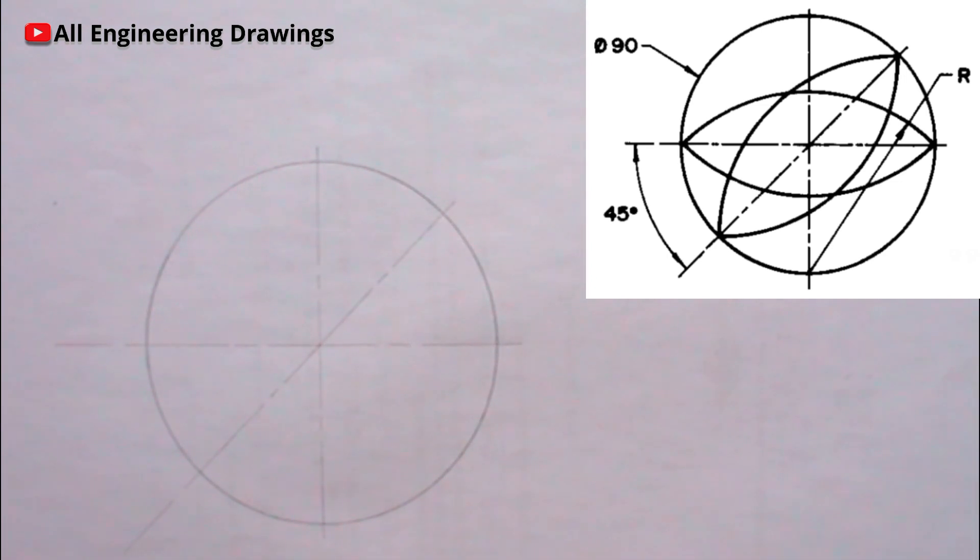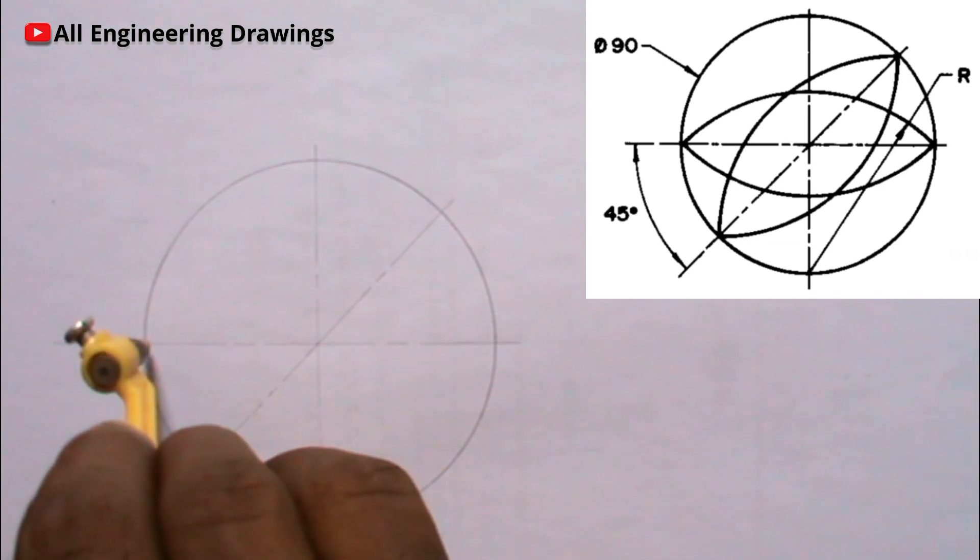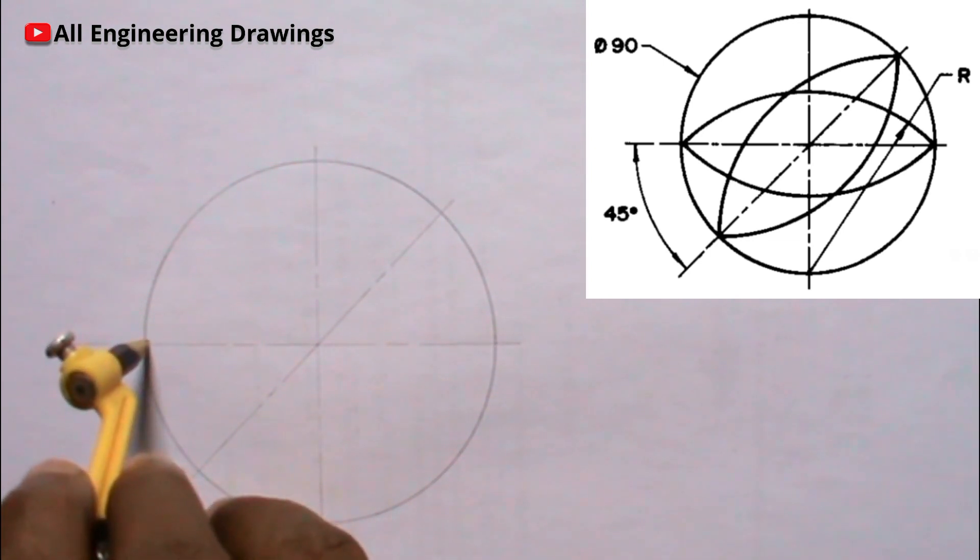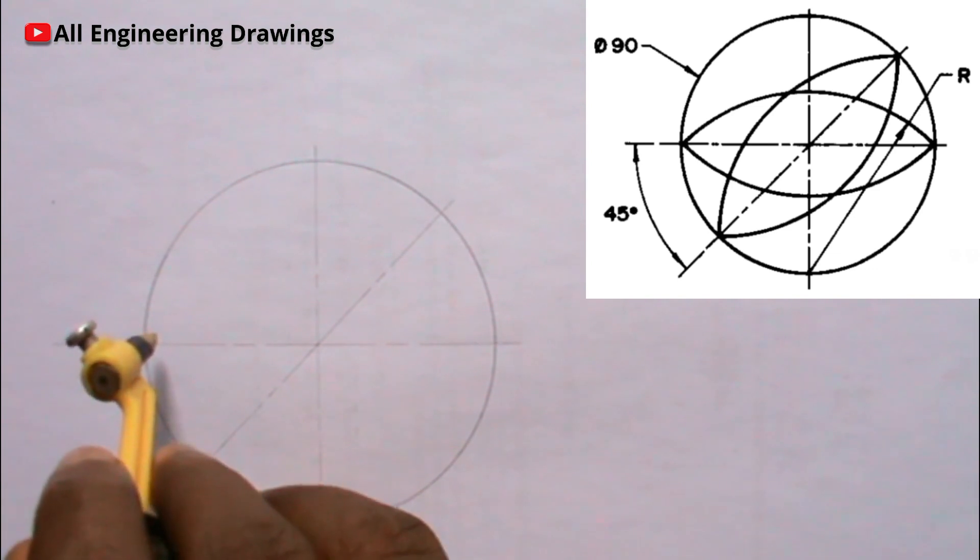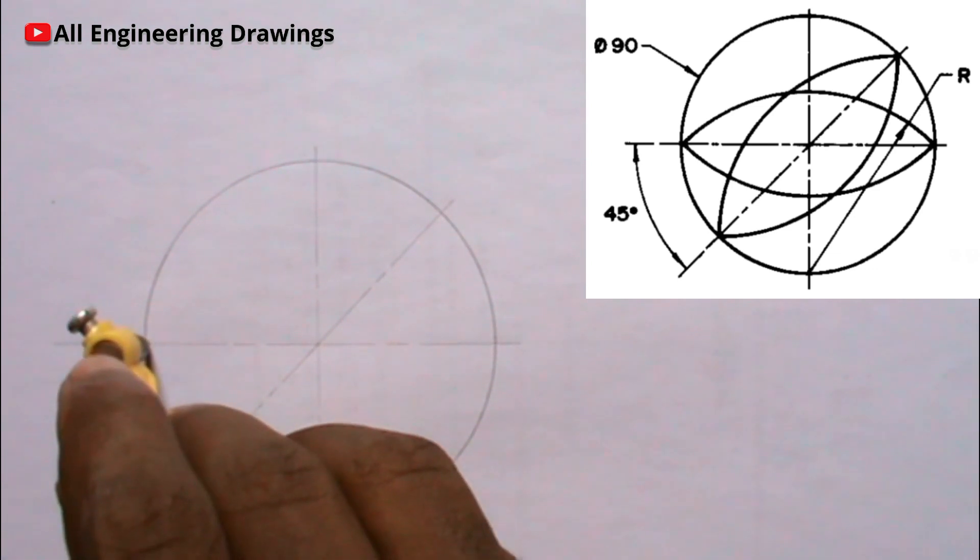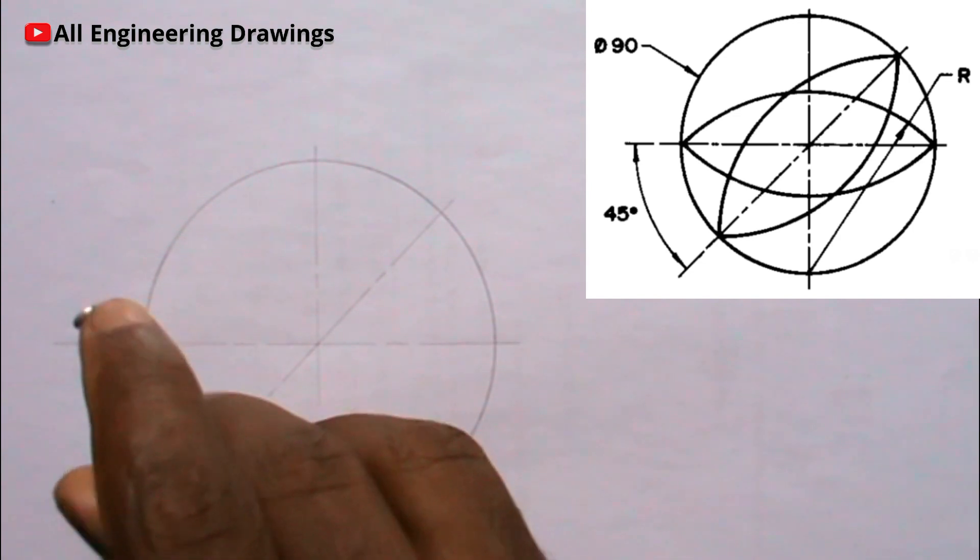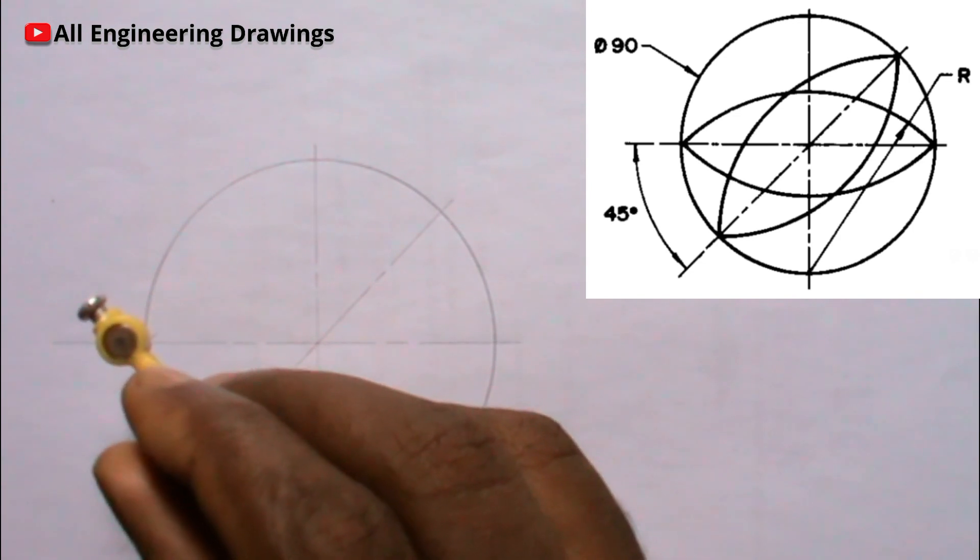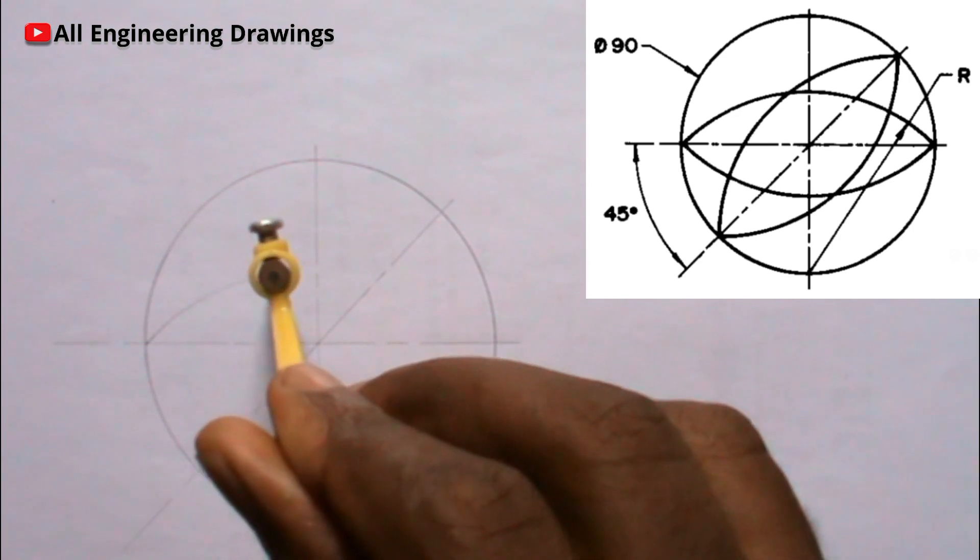Now, place your compass on this point, that is the point where this vertical line intersects the circle at the bottom. Then adjust your compass to this point, the point where this horizontal line intersects the circle. Then draw a curve, that is an arc.